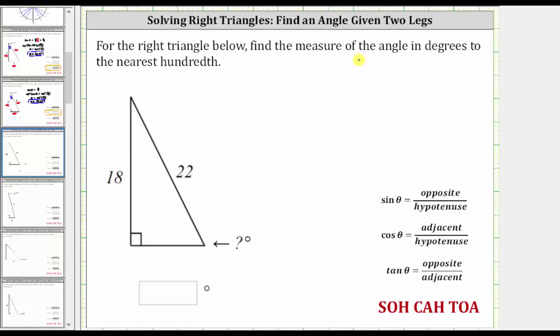For the right triangle below, find the measure of the angle in degrees to the nearest hundredth. So our goal is to find the measure of this angle here. Let's call this angle theta.